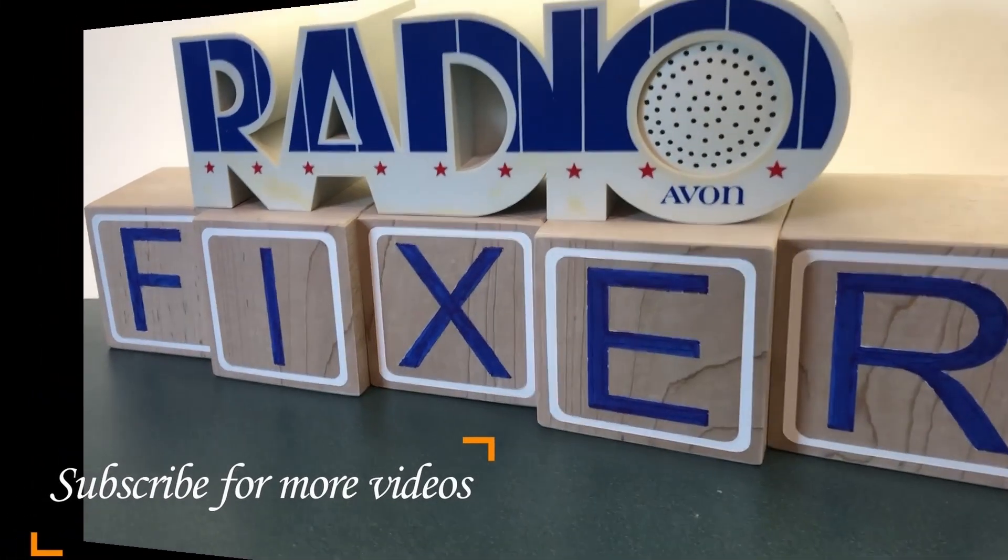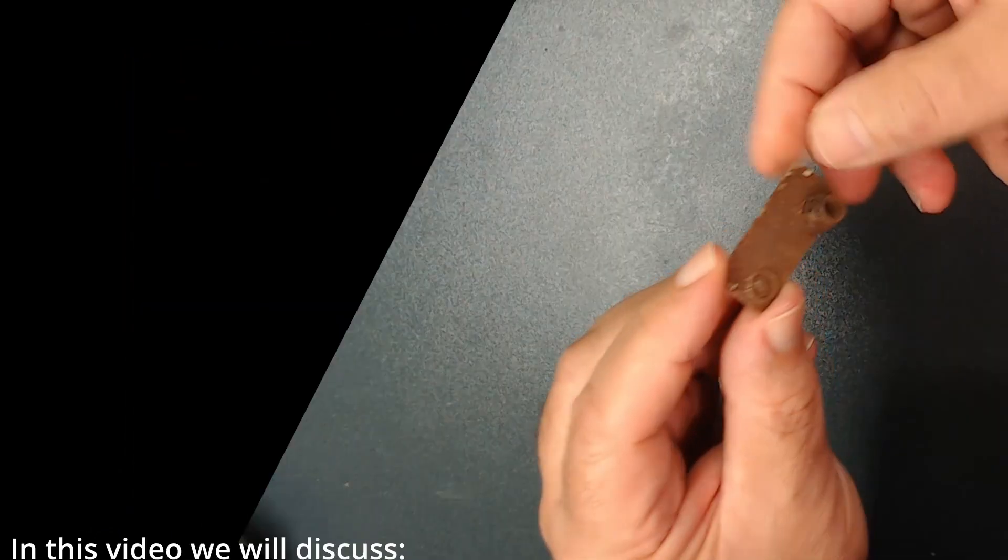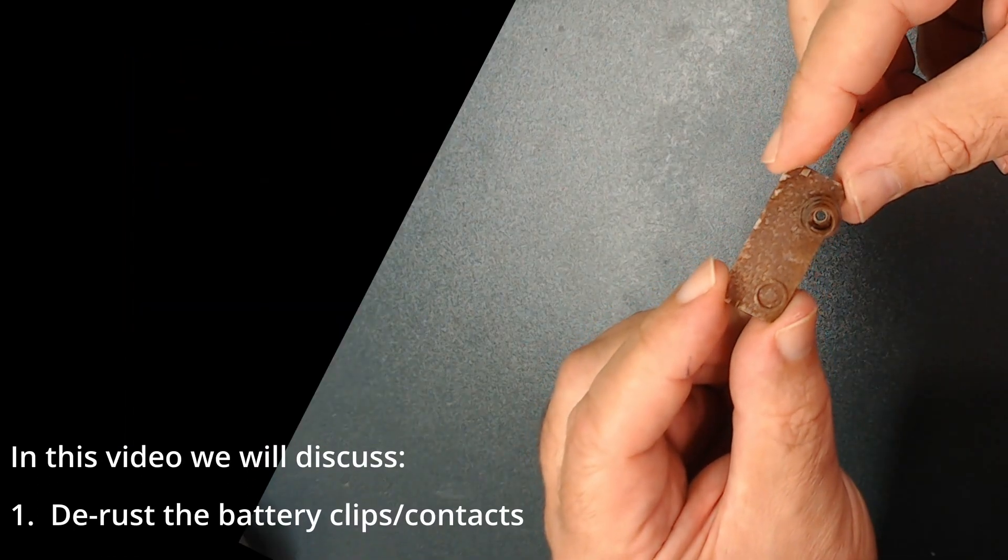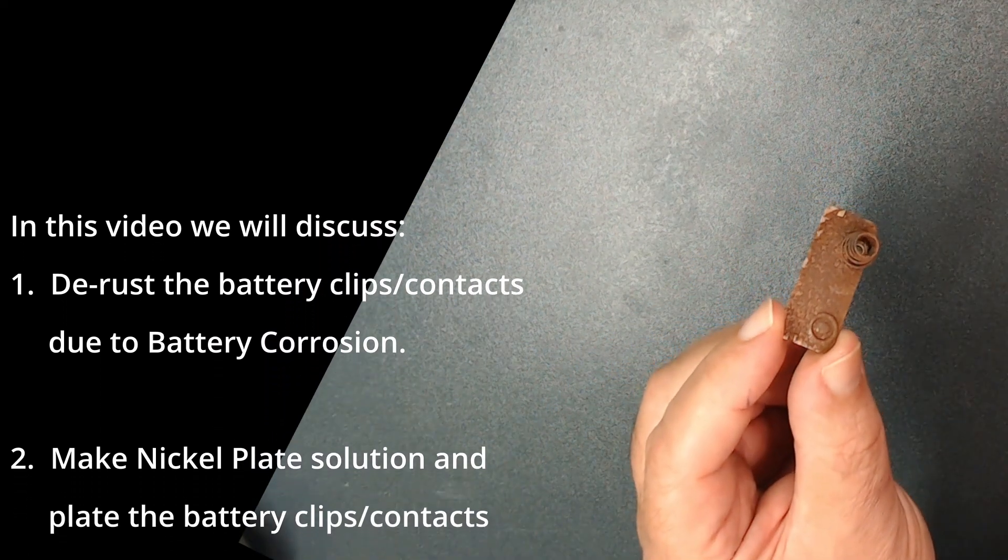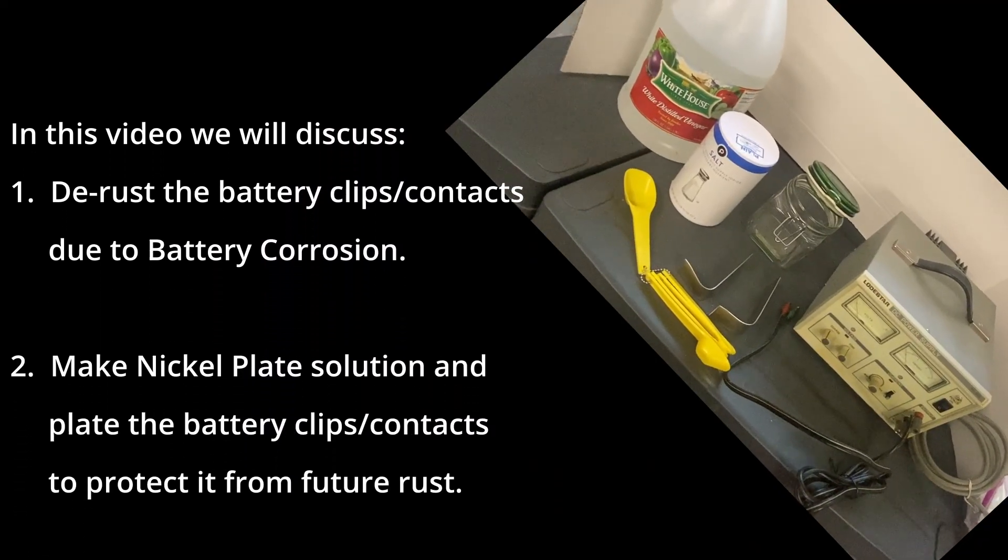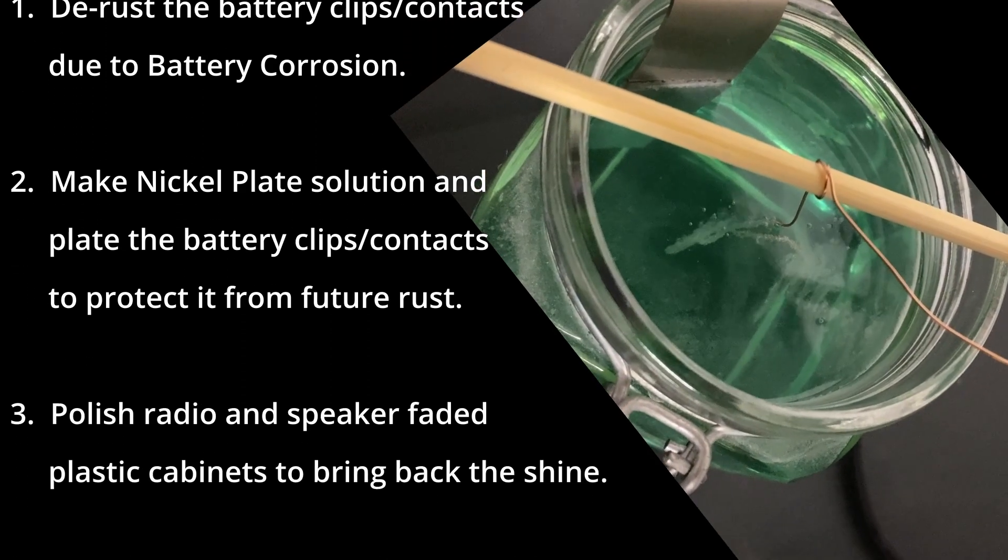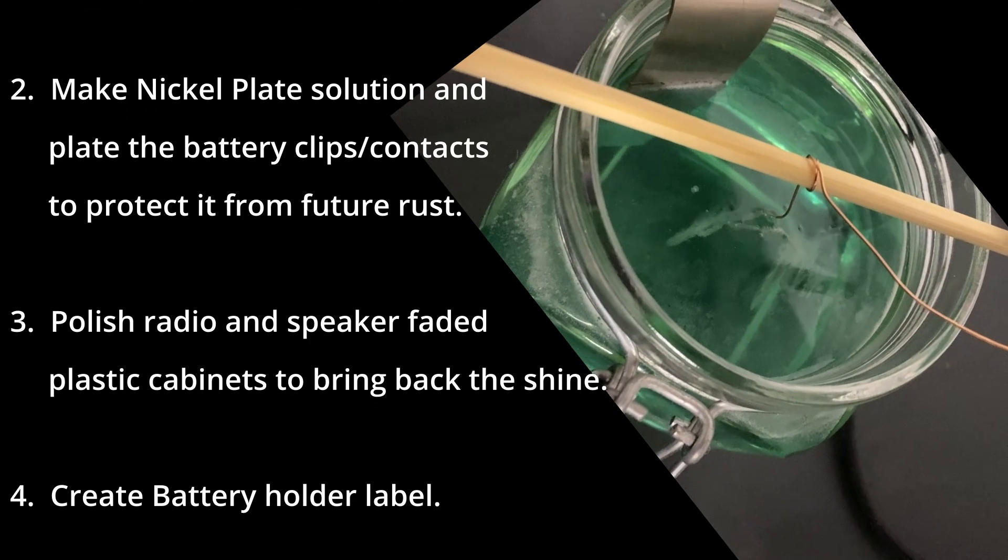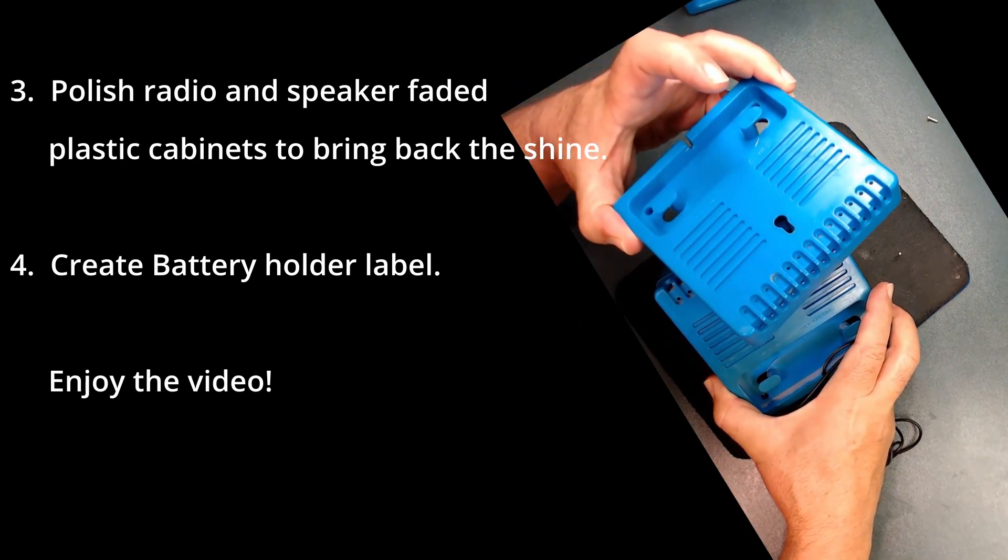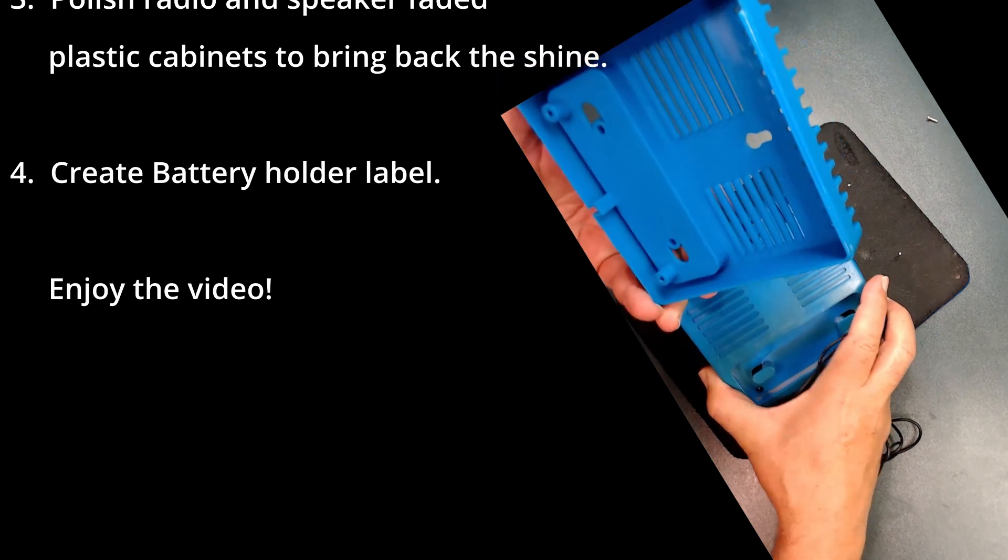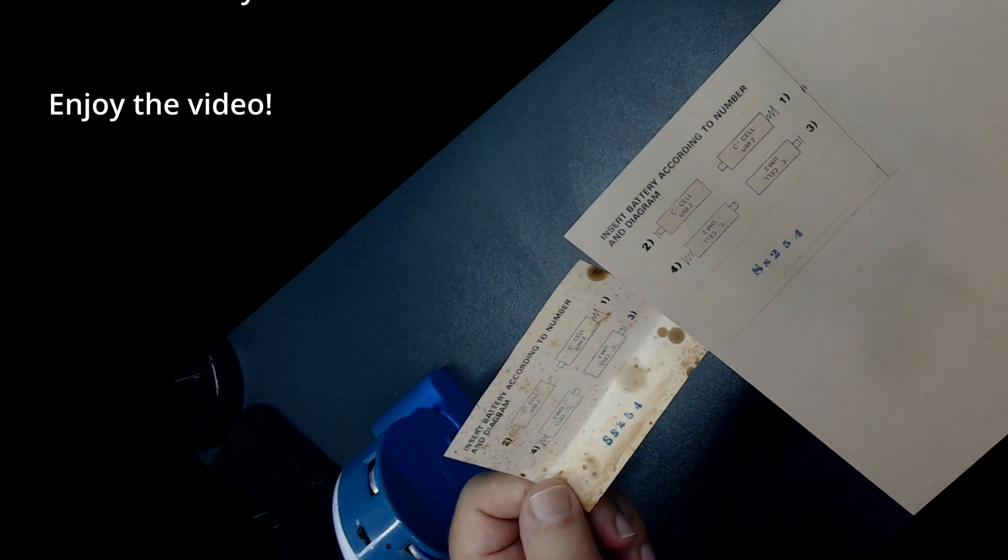Welcome to Radio Fixer's channel. Subscribe for upcoming videos. In this video, we will de-rust the battery clip due to battery corrosion, make nickel plate solution and plate the battery clip to protect it from future rust, polish radio and speakers' faded plastic cabinets to bring back the shine, and create a battery holder label. Enjoy the video.